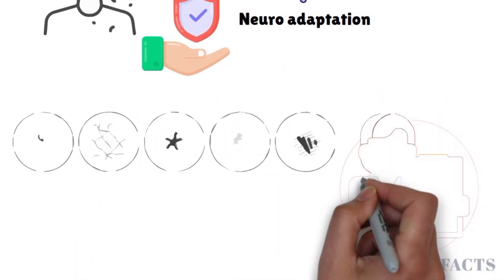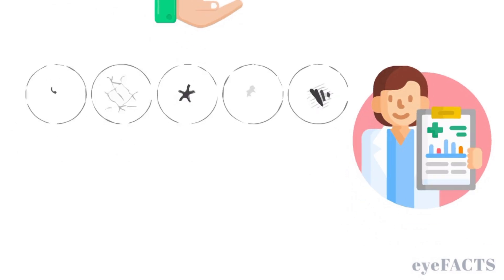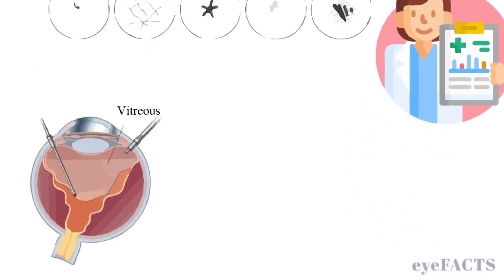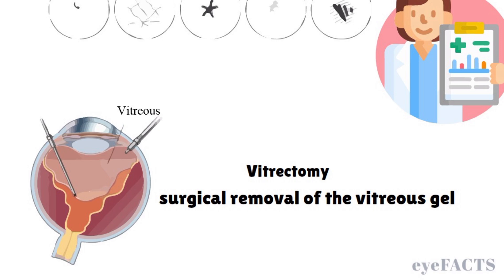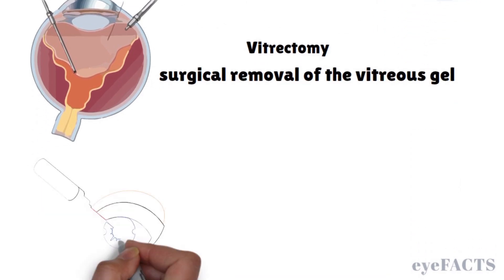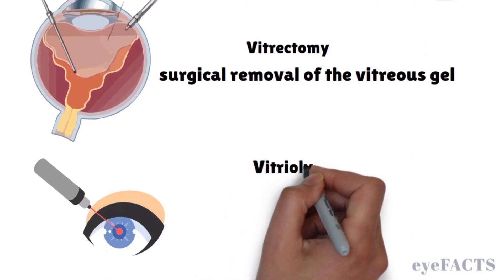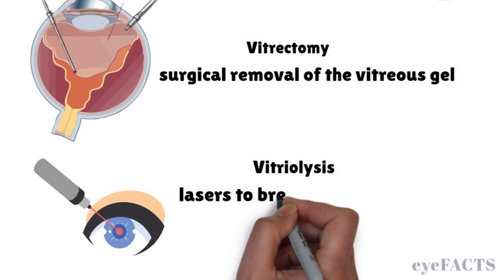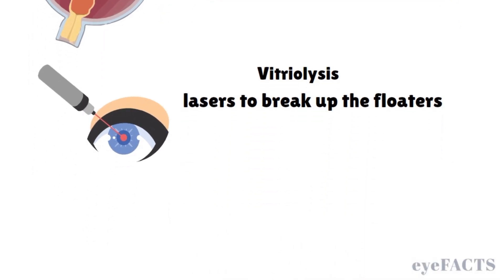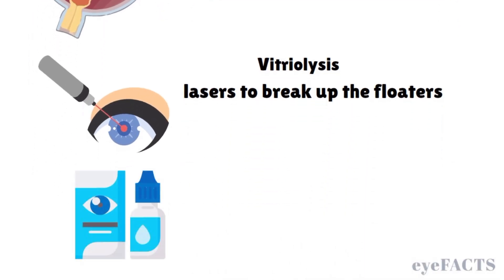One type of floater treatment is a vitrectomy, an eye surgery that involves the surgical removal of the vitreous gel. Another option is called laser vitreolysis, which uses lasers to break up the floaters. There is also new research into dilute atropine drops that could be helpful as well.